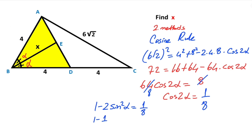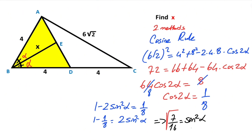So 1 minus 1 over 8 equals 2 times sine squared alpha. Therefore 7 over 16 equals sine squared alpha. Taking the square root of both sides, sine alpha equals root 7 over 4.